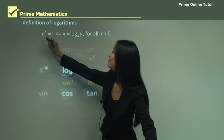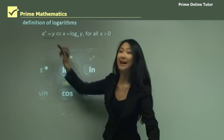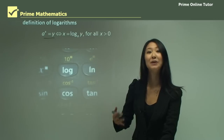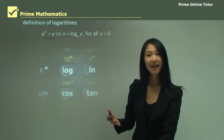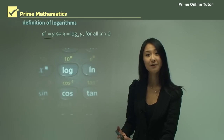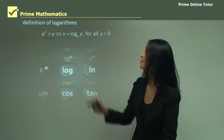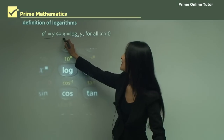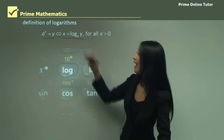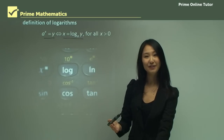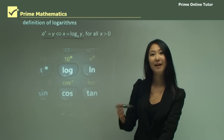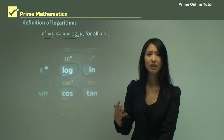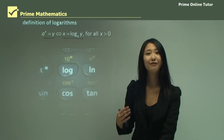Here we have your basic index form: a to the power of x equals y. And how do we change that into logarithm form? Over here we have your basic logarithm form, which is x equals log base a of y. This is a really important change that we all have to remember.